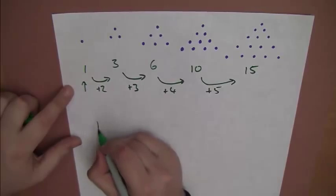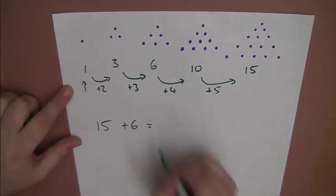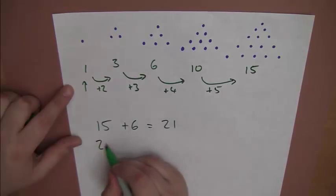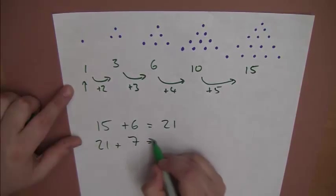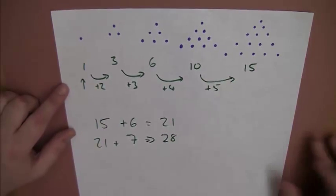So for the next triangle number, we'll do 15, add on 6. Well, that is 21. Next one, 21, add on 7. You get the point? It's just keep adding 1 on each time.